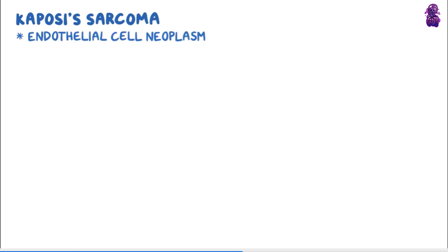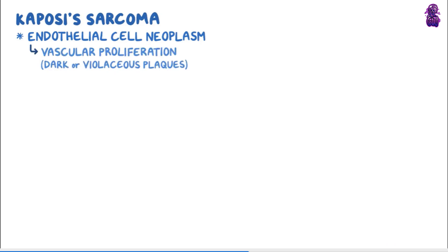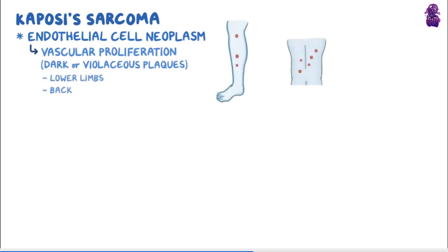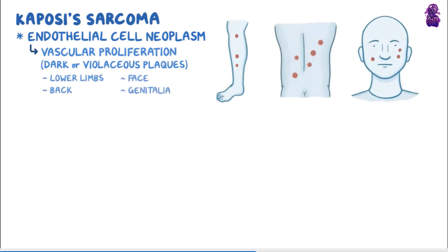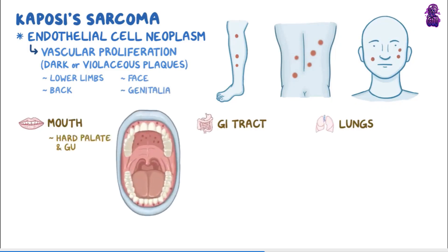Regardless of type, Kaposi's sarcoma is an endothelial cell neoplasm, so it causes vascular proliferation, resulting in dark or violaceous plaques. These lesions are typically found on the skin, especially on the lower limbs, back, face, and genitalia, but they can also affect the mouth, GI tract, and lungs. Lesions in the mouth are usually found on the hard palate and gums, and they can be easily damaged by chewing, so they can bleed or get infected.